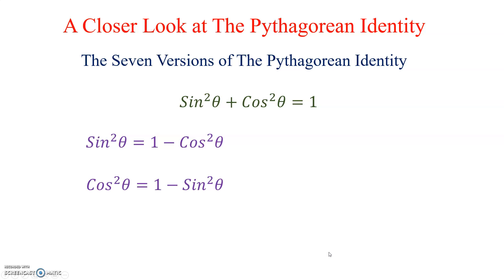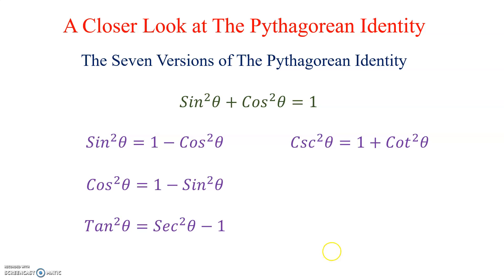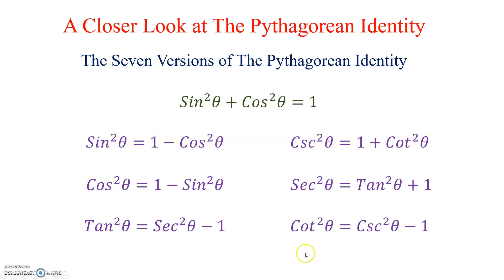We now have an additional version of the Pythagorean Identity with Secant squared isolated: Tangent squared Theta plus 1 equals Secant squared Theta. Isolating Tangent by subtracting 1 gives us Tangent squared Theta equals Secant squared Theta minus 1. So listing all seven versions: the original Sine squared plus Cosine squared equals 1; versions isolating Sine squared and Cosine squared; and versions involving Tangent, Secant, Cotangent, and Cosecant. Each version is used when working with very specific information.